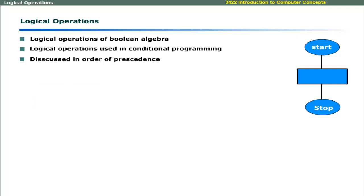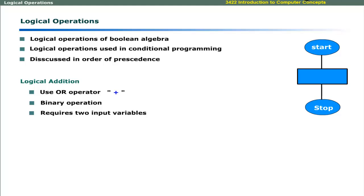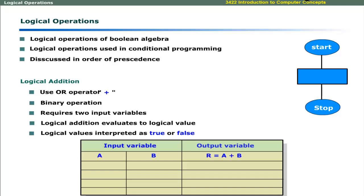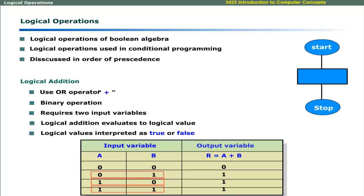The third logical operation is logical addition (OR). The result of logical addition will be 1 or true if any one of the input variables is true.